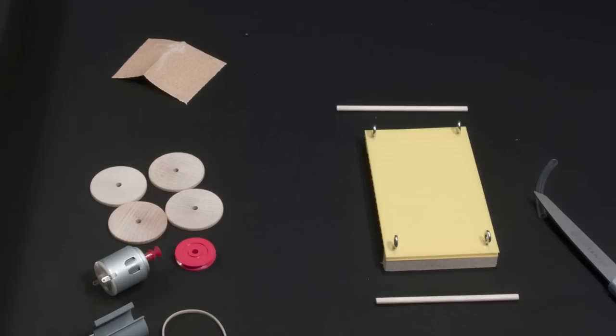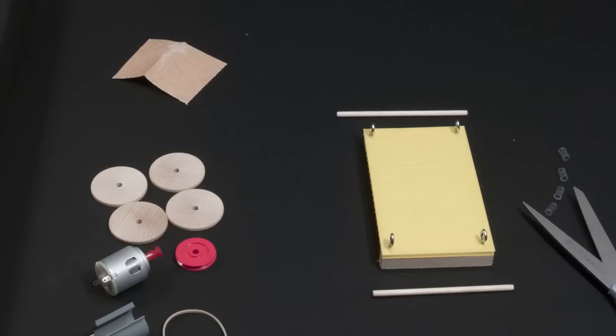Now get your piece of rubber tubing and use scissors to cut it into four pieces. Each piece should be about half a centimeter long so that it will prevent the wheels from rubbing against the frame of the car.